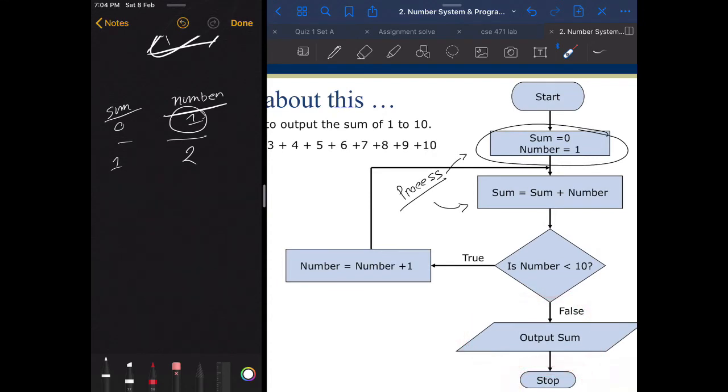So we were at 2. Is 2 less than 10? So sum plus number, that's 1 plus 2, that would be 3. Then we go down. Is number less than 10? Number is 2. 2 is of course less than 10. We go to the true side, we increase number by 1, that would be 3.